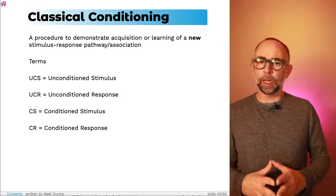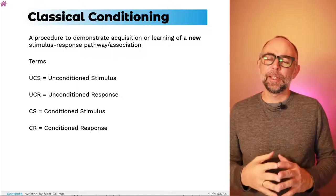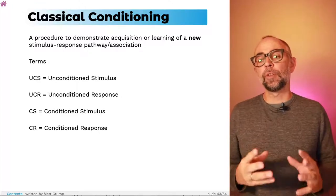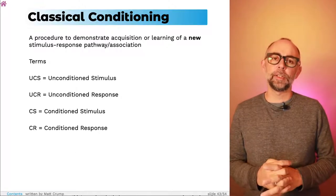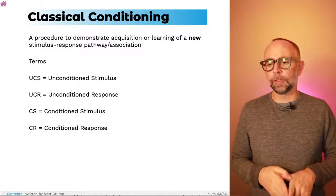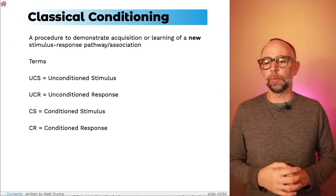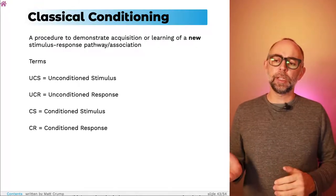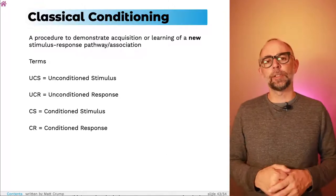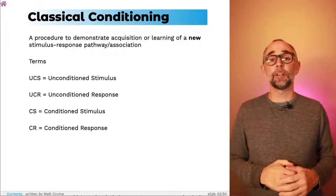Pavlov didn't work out totally how the brain works, but he did describe a procedure to demonstrate the acquisition or learning of new stimulus response associations in animals. Let's make sure we cover what that procedure is right away, but before we do that, I just want to point out there's going to be some terms we need to make sure we cover what they are. So the UCS, that stands for the unconditioned stimulus, the UCR, the unconditioned response, the CS is a conditioned stimulus, and the CR conditioned response.